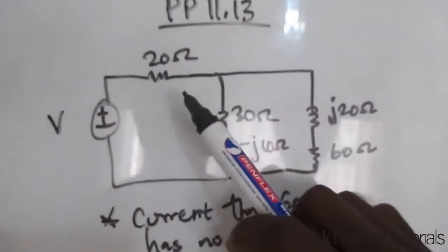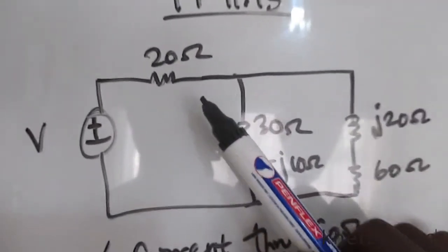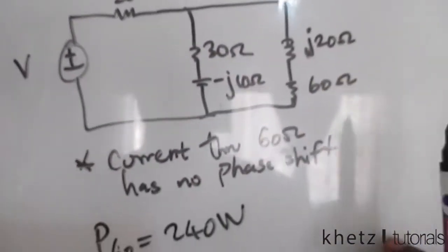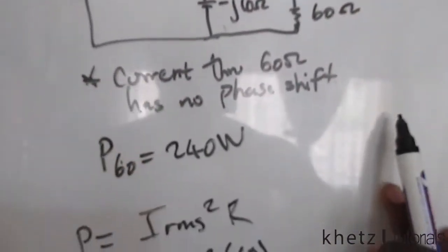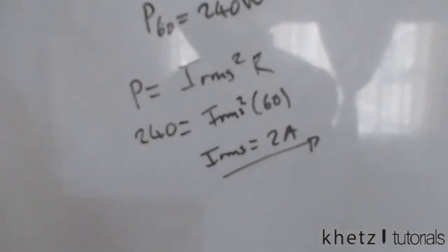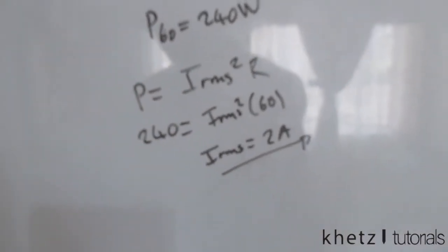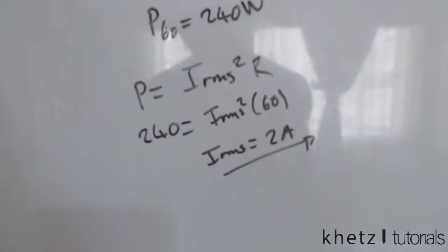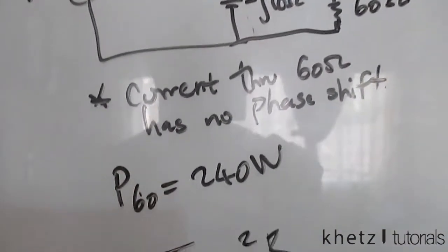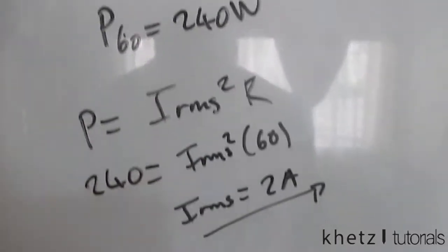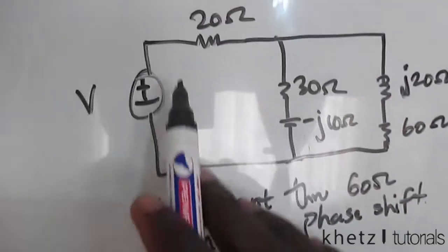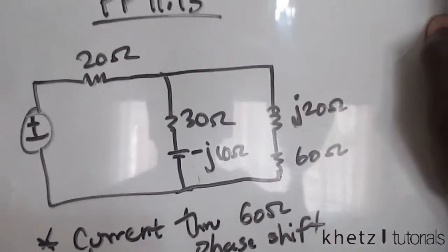The question asks us to find the value of the voltage source, as well as the complex power associated with each element, and finally the total complex power associated with the circuit which we have in front of us. So that is what we're going to find.